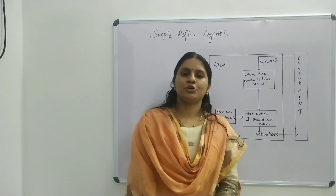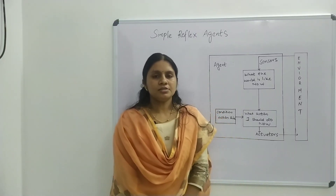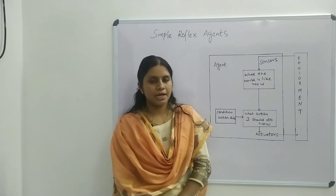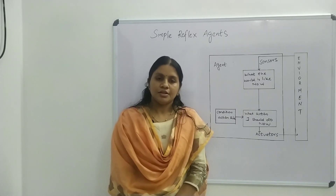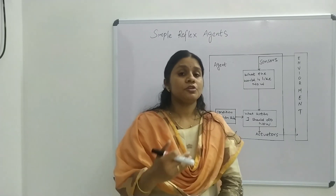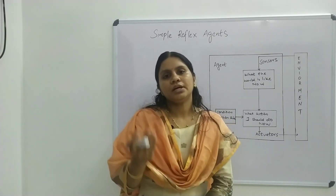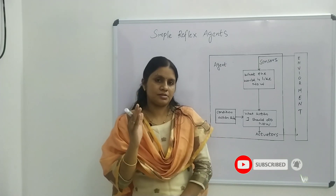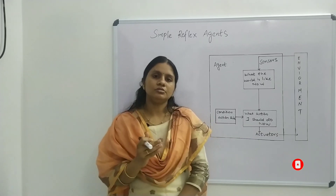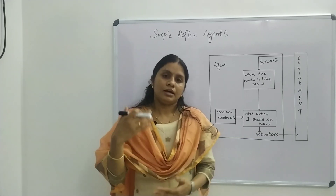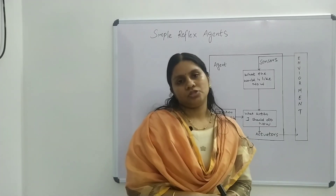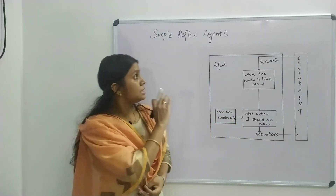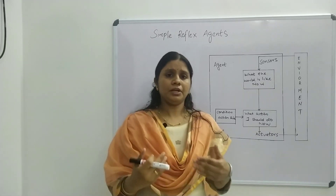Hi friends, welcome to our new session. In the last video we discussed about agents and their types of environment. In this video we are going to discuss about the types of agents. There are mainly five types of agents: simple reflex agent, model based reflex agent, goal based agent, utility based agent, and finally learning agent. First we will discuss about the simple reflex agent.